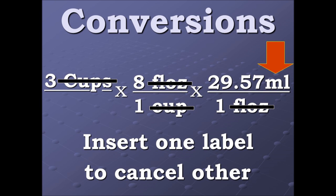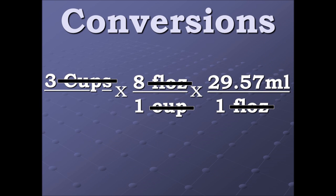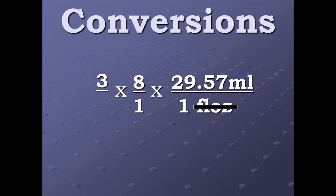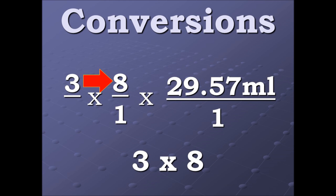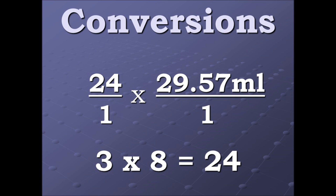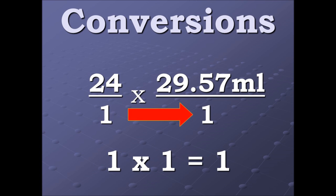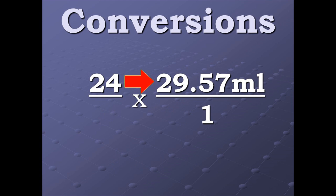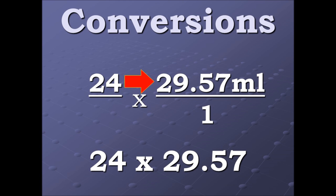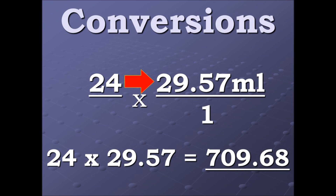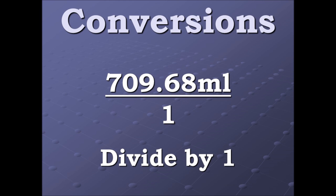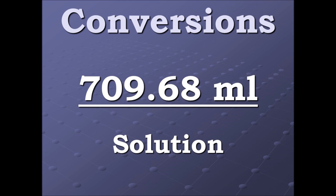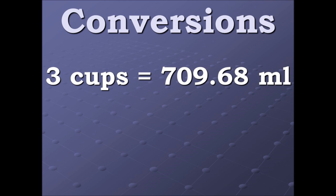All the labels canceled out except for milliliters. Now we multiply across: 3 times 8 equals 24, 1 times 1 equals 1, and 24 times 29.57 equals 709.68. Divide by one, and here's our solution: three cups equals 709.68 milliliters.